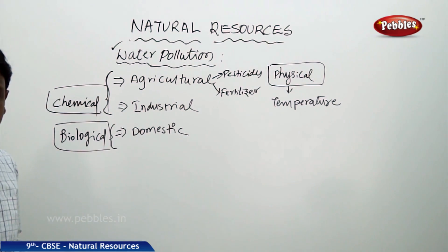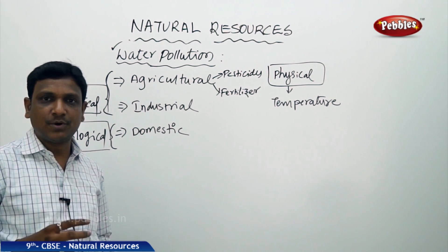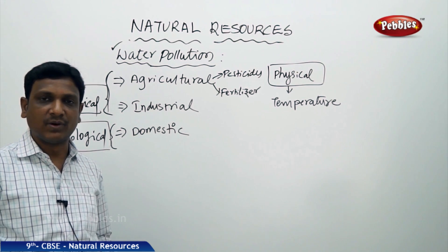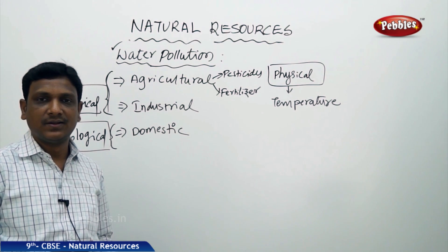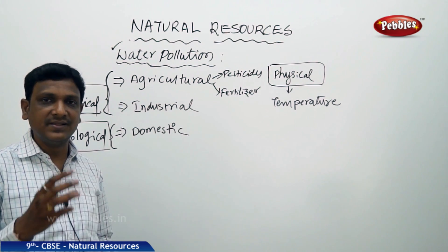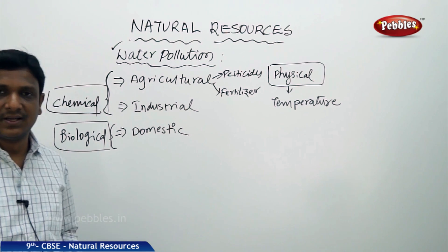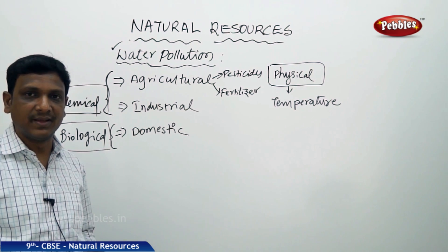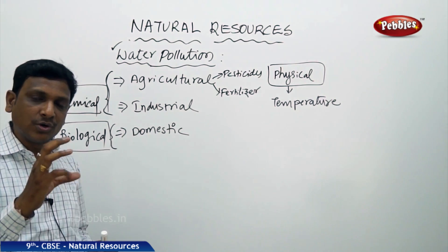Now industrial sources. Industries are very important because we need so many products and goods for our daily needs, and all these products are made in factories. In a factory, water is used for processing, cleaning, and many other purposes, and this water is then discharged into nearby water bodies. Many chemicals are produced in factories as waste, and many factories are releasing these chemicals into water bodies without detoxification.